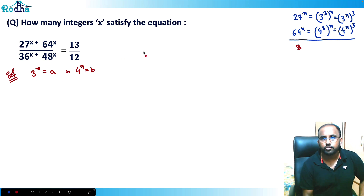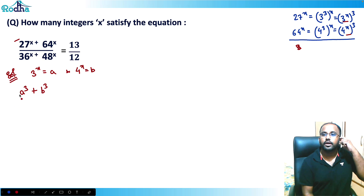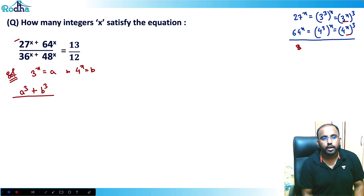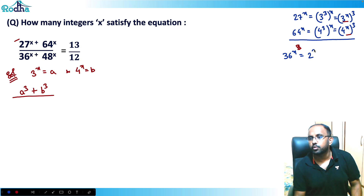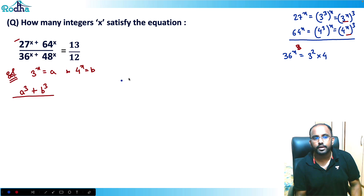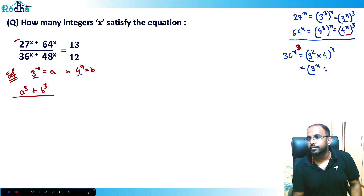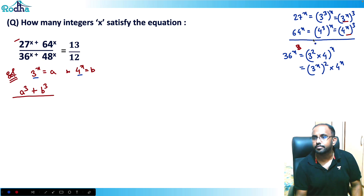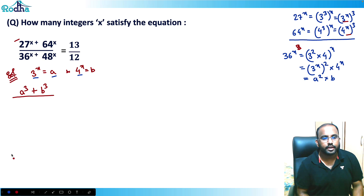Rewriting: 27^x = a³ and 64^x = b³, so the numerator is a³ + b³. For the denominator, 36^x = (3² · 4)^x = (3^x)² · 4^x = a²b.